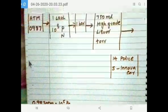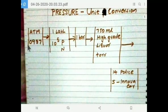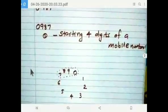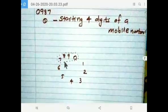And very important thing is this 0, 9, 8, 7, how to remember this number, these digits, four digits. Yes, you can remember this in two ways. Maybe you can remember this as starting 4 digits of a mobile number. Sometimes 0, 9, 8, 7, starting 4 digits of a mobile number.